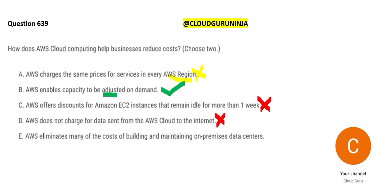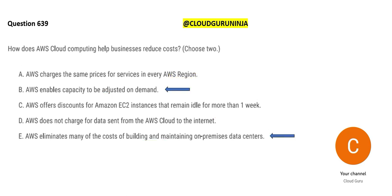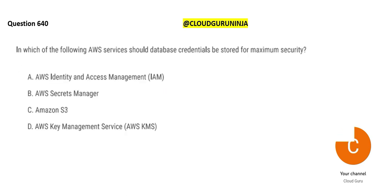We are left with option E: AWS eliminates many of the costs of building and maintaining on-premises infrastructure. When you come to AWS — or any cloud provider like Azure or Google — they already have their data centers, so you don't have to purchase any hardware or provision a data center; it is all available for you. So options B and E are the correct answers.